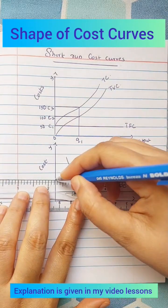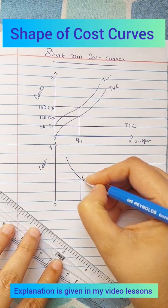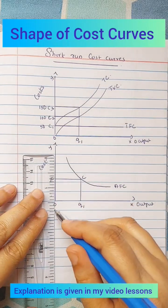It is a rectangular hyperbola. As Q increases, AFC decreases.